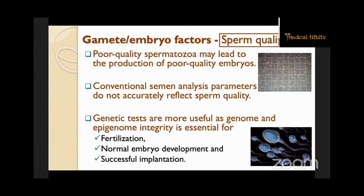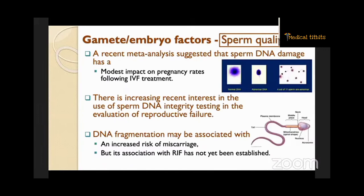When it comes to sperm quality, poor quality spermatozoa may lead to the production of poor quality embryos. Conventional semen analysis parameters do not accurately reflect sperm quality; genetic tests are more useful as genome and epigenome integrity is essential for fertilization, normal embryo development, and successful implantation. A recent meta-analysis suggests that sperm DNA damage has a modest impact on pregnancy rates following IVF. DNA fragmentation may be associated with an increased risk of miscarriage, but its association with RIF has not yet been established.